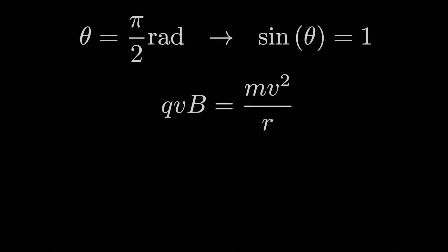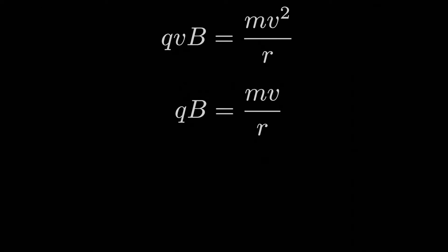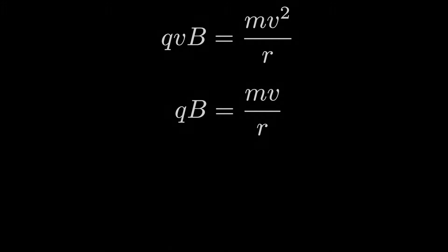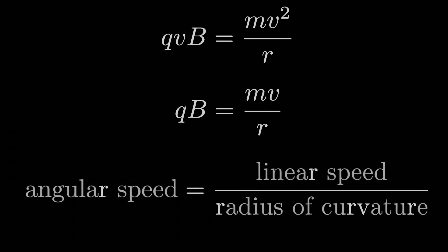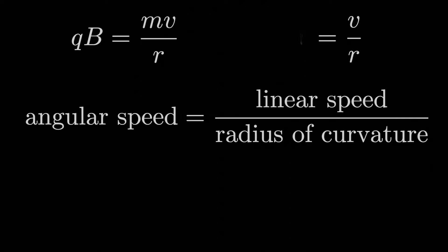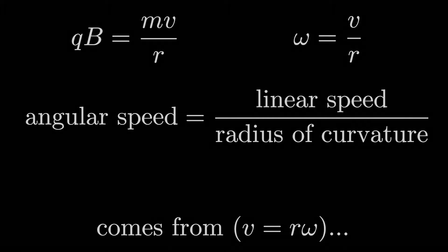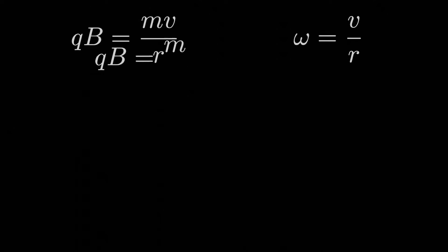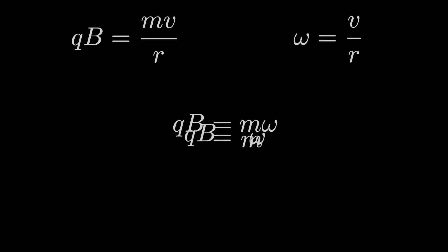We can cancel out one of the v's and we're left with qB = mv/r. From classical mechanics, for uniform circular motion the angular speed ω equals v/r, which comes from v = rω. Substituting, we get qB = mω, so solving for omega: ω = qB/m.